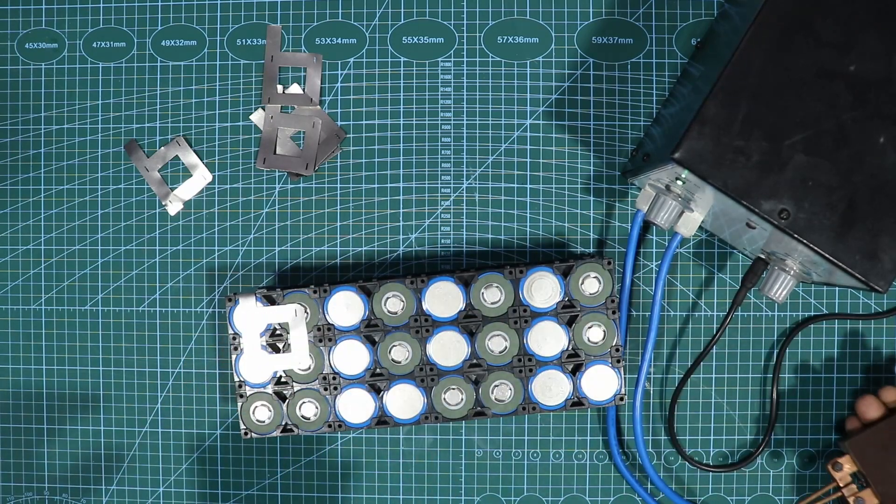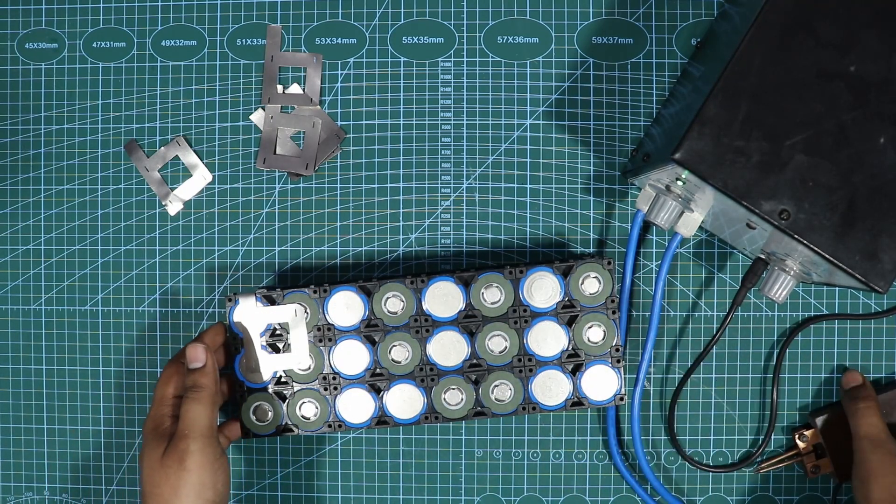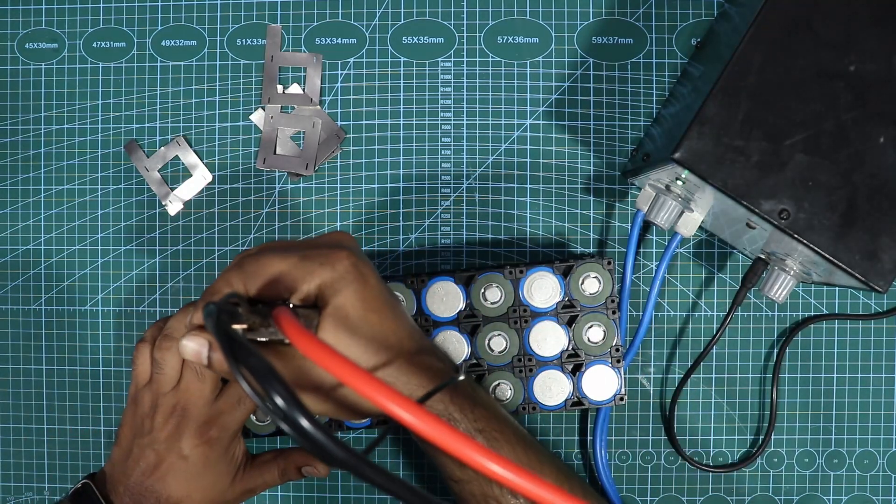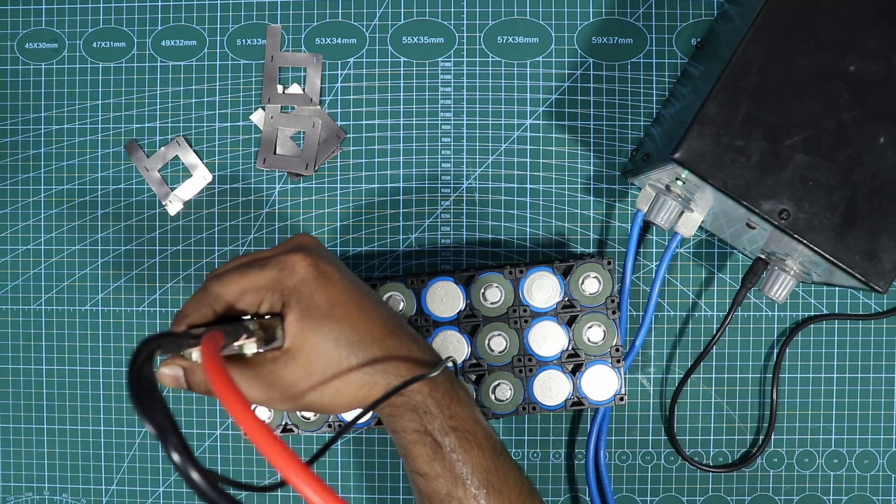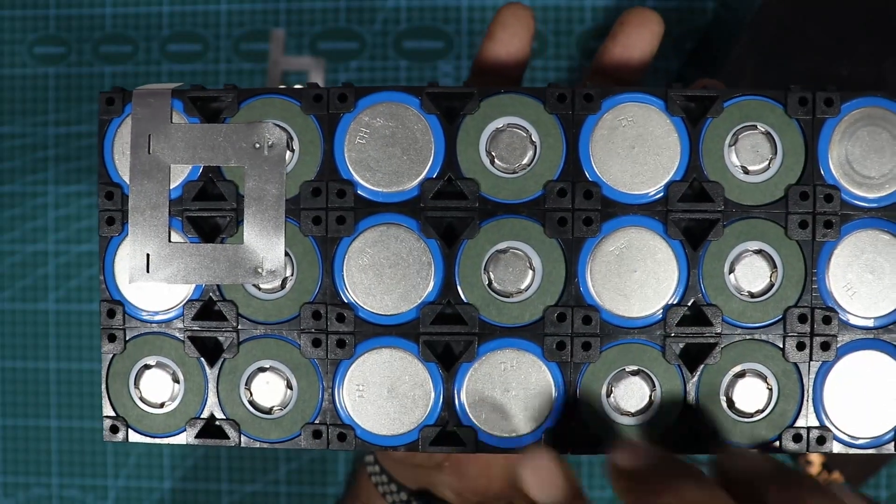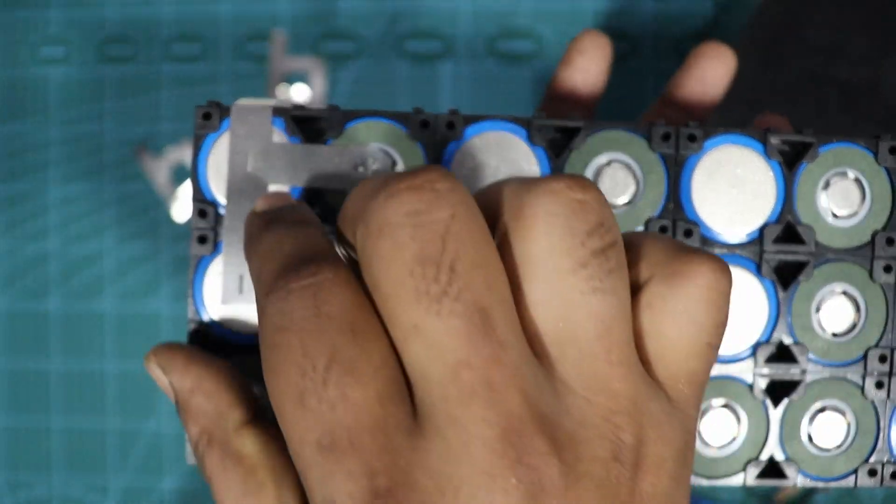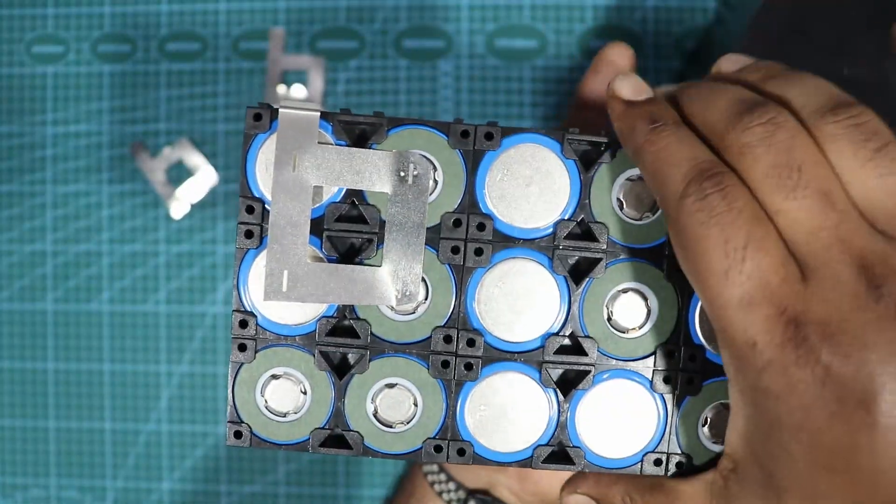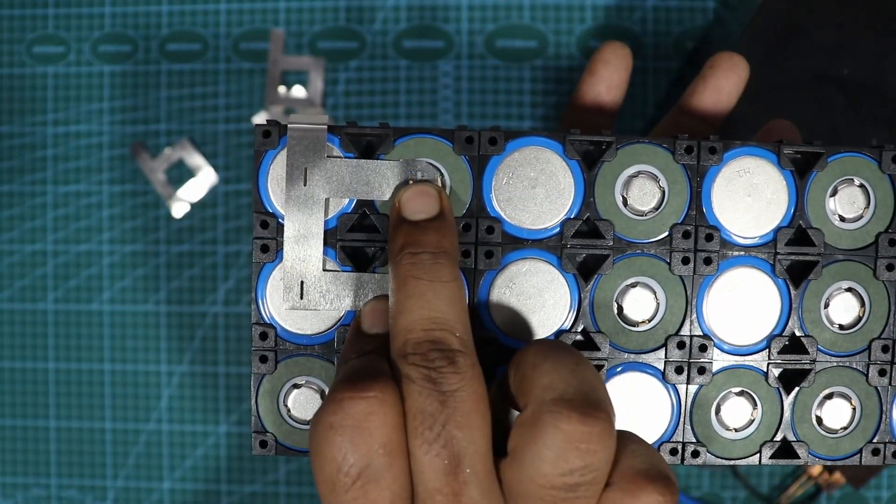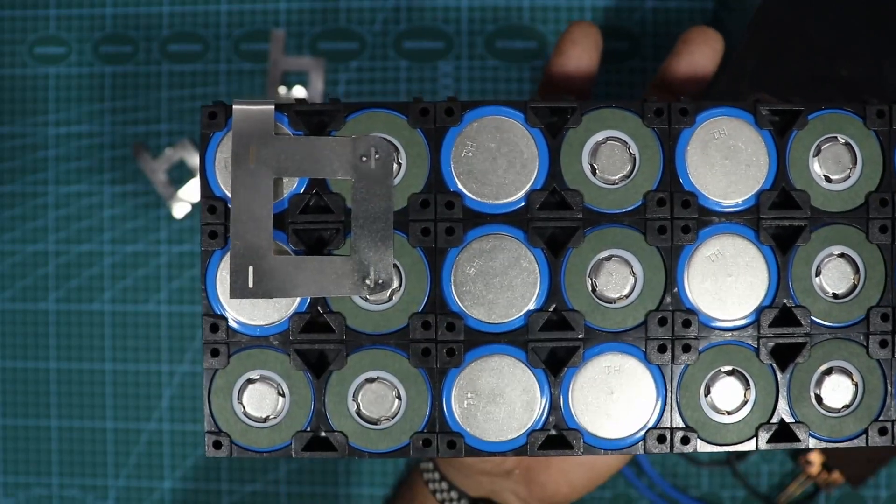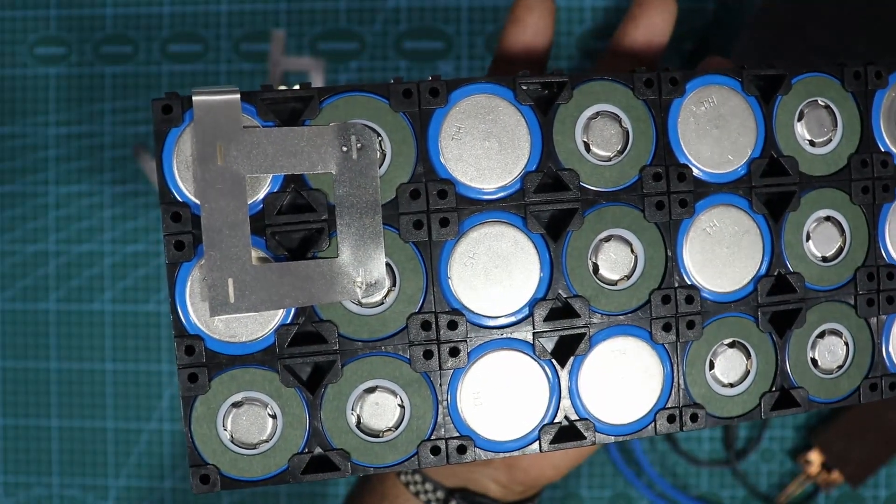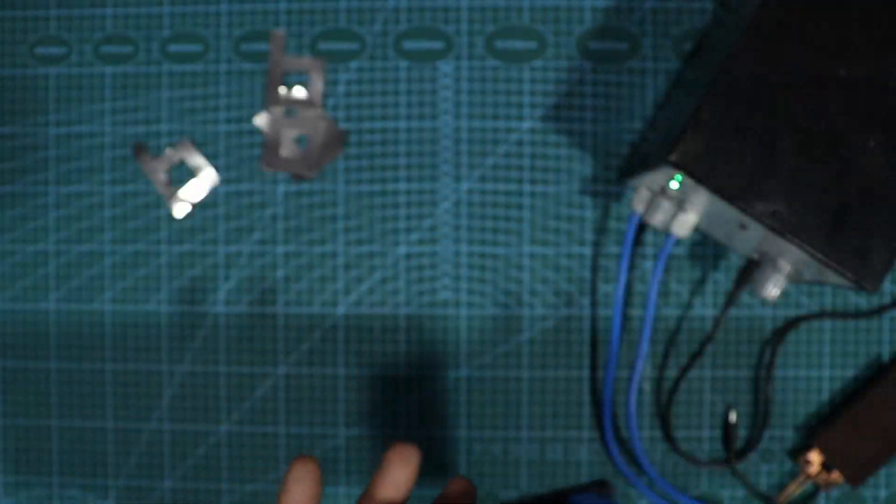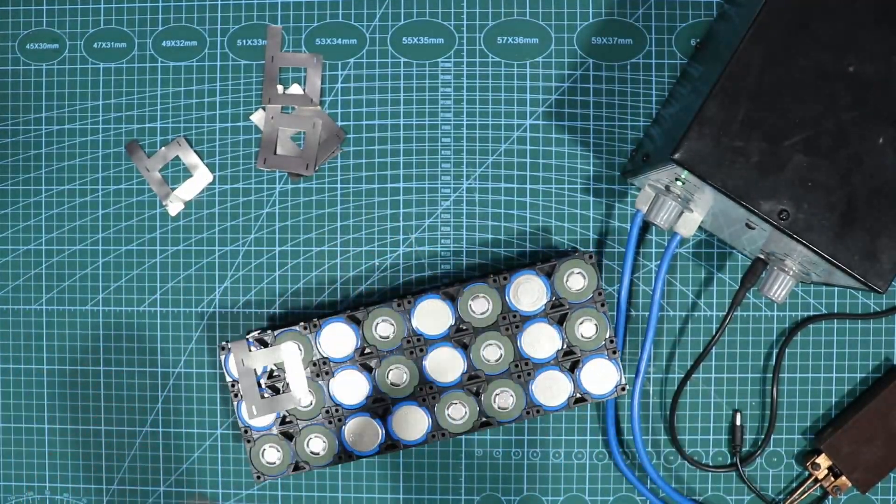So there was a small spark and if you see the spot weld did go out. Let me do it on the other side as well. Let me get that to focus. If you see the spot weld is quite good, it's strong as well. I can't peel it off and I don't want to destroy it. Spot weld is good, I'm quite satisfied with it. Now let's quickly do a spot weld for all the sides and then I'll show you how it looks like.